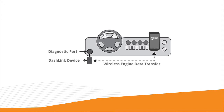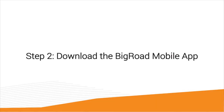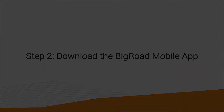You'll use the free BigRoad mobile app on your phone or tablet to connect to your Dashlink via Bluetooth. That Bluetooth connection is how your Dashlink talks to your mobile device and records your drive time straight to your logs. So that leads us to step two: downloading the BigRoad mobile app.